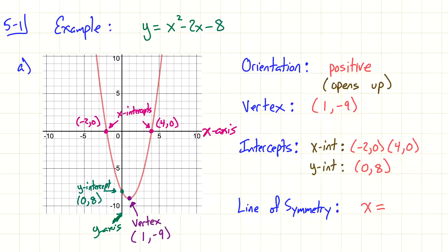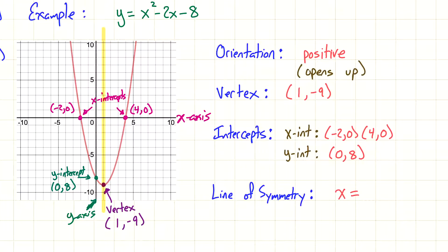The last thing is line of symmetry. This has to do with reflection symmetry — sometimes we use the word mirror. Where can I draw a line so that it cuts this graph in half? The nice part about the line of symmetry is it always goes through the vertex. That line going right down the middle is our line of symmetry. It's always going to be X equals something. I just look to see where it crosses the X-axis — in this case it crosses at 1, so the line of symmetry is X equals 1.